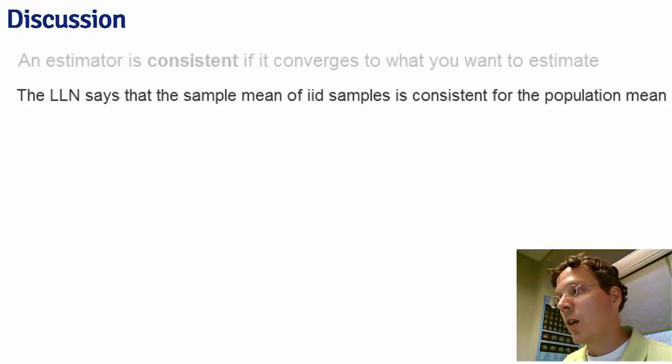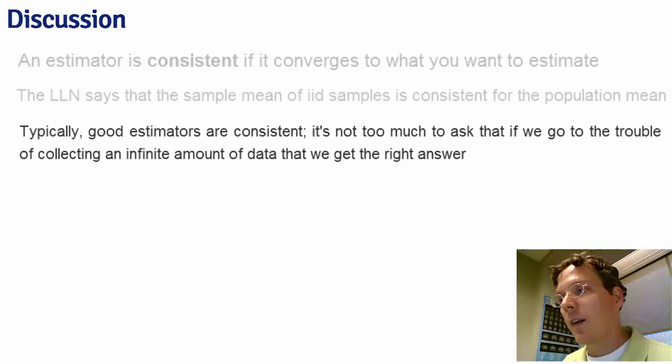The law of large numbers says that the sample mean of IID samples is consistent for the population mean. This is a very good property to have because it's basically saying if we go to the trouble of collecting an infinite amount of data, we get exactly the right answer.